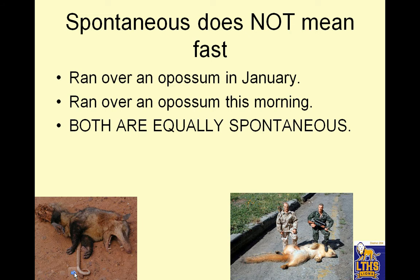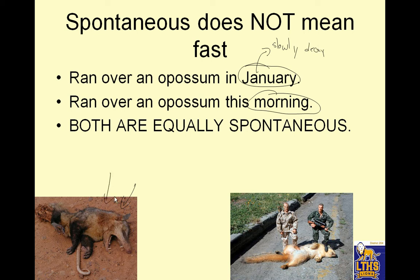Spontaneous does not mean fast. For example, driving to work yesterday I saw someone run over an opossum. Someone ran over an opossum in January, someone ran over one this morning — both are equally spontaneous. In Indiana they don't really get rid of roadkill, so the opossum from January is still there, slowly decaying. The one from this morning is quickly decaying because temperature is higher. We learned that if temperature goes up by 10 degrees it doubles the rate. But that has nothing to do with spontaneity.